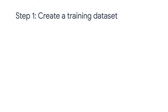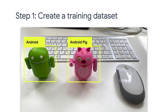The first step — collecting and labeling your training images — is probably the most time-consuming step, but also the most important one of the whole process. You need to collect training images that contain the objects you want to detect. In each image, you will need to draw a bounding box around each object and label it. In this image, for example, I labeled two objects: an Android and an Android PIP.